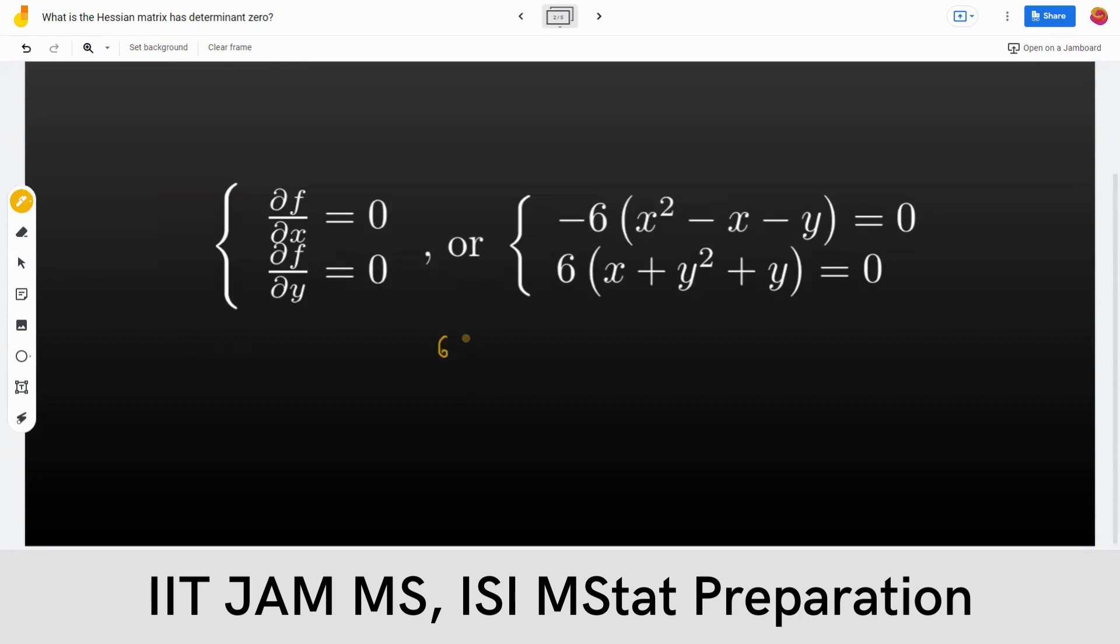We get 6x squared minus 6x minus 6y if you take this on both sides. Let's remove the 6. If you divide by minus 6 on the first equation, you get x squared minus x minus y equals zero. And if you divide by 6 on both sides from the second equation, you get x plus y squared plus y equals zero.